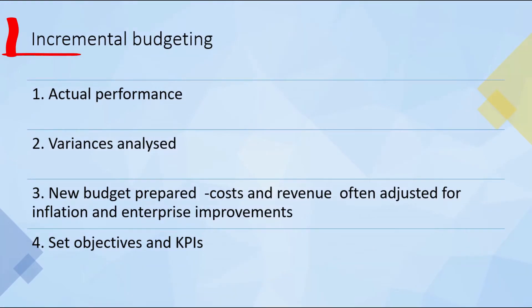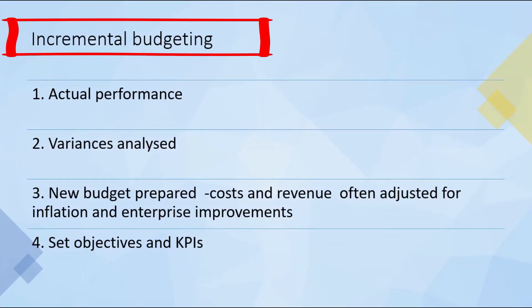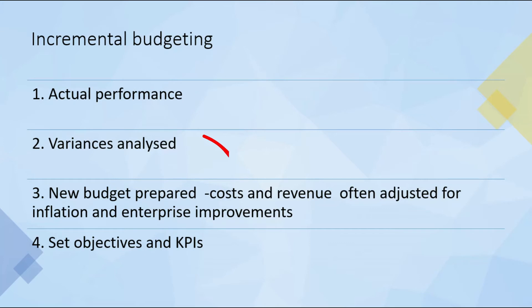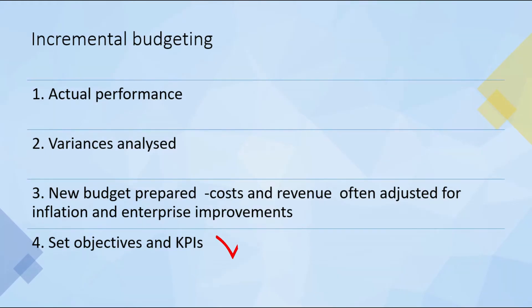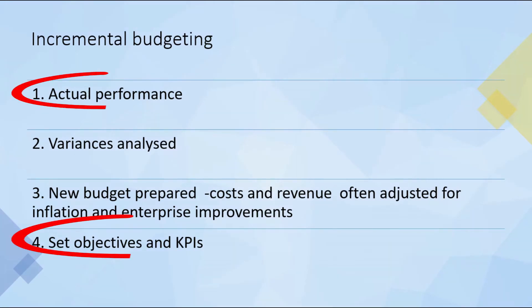With Incremental budgeting, we start with actual performance, then the variance is analyzed, and a new budget is prepared. Costs and revenue are often adjusted for inflation and enterprise improvements. It sets new objectives and key performance indicators to compare with actual performance levels.